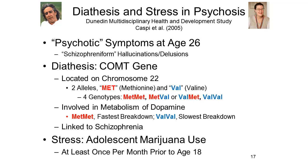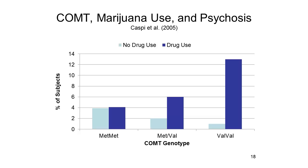Using subjects from the Dunedin study, Caspi and his colleagues classified their subjects according to the form of the COMT gene and also by their history of adolescent marijuana use. When they looked at the incidence of psychotic symptoms in these subjects when they were young adults, they found a clear gene-by-environment interaction. Their risk for delusions, hallucinations, and other schizophreniform symptoms was greatly increased if they had two copies of the VAL allele, coupled with frequent marijuana use as adolescents. If they had only one copy of VAL or two copies of MET, their risk was greatly reduced.